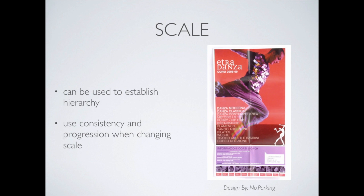Scale can also be used to establish hierarchy. Just changing font size — a heading at 18 point, subheading at 14 point, body text at 10 point, footer at 8 point — creates a clear hierarchy with nothing else changed. The other important thing is maintaining consistency when you do it. If you establish that scale, on every page in your portfolio it should be the same 18, 14, 10, and 8. It should always be consistent page to page. As you're developing this body of work, there's a framework for which you're working within.